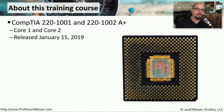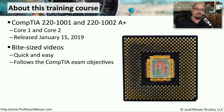CompTIA introduced the 220-1001 and the 220-1002 A+ exams on January 15, 2019. You might also see these exams referred to as the Core 1 and the Core 2 exam. If you look through the list of available A+ videos for this course, you'll see there is a very long list — I've broken up the videos into bite-sized chunks, and all of these videos follow the CompTIA exam objectives, so you can cross-reference by objective number and video name.